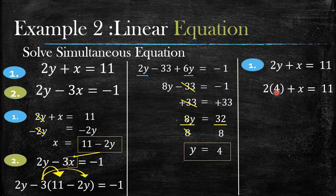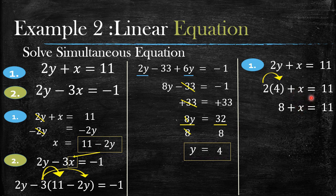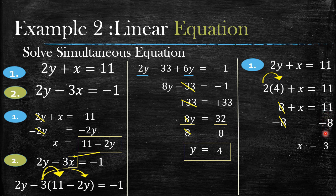When you substitute the 4, always put it into brackets. So 2 times 4 gives 8. The x comes down the same way, and 11 also comes down. Since I want x alone and this is a positive 8, I minus 8 on both sides. The 8s cancel out and I'm left with x. 11 minus 8 equals 3. Just like that you have found your x value: y equals 4 and x equals 3 for these two equations.